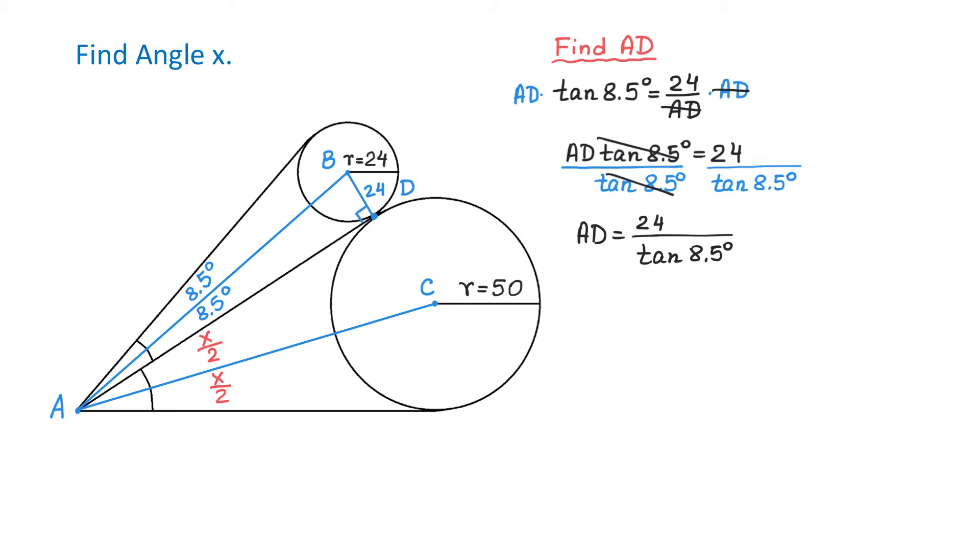Using a calculator, we will get that AD is approximately 160.59 units.